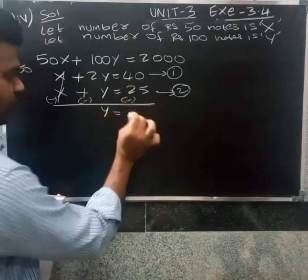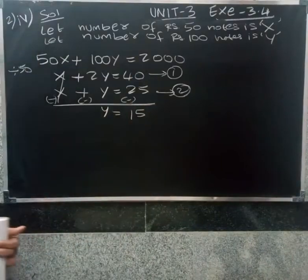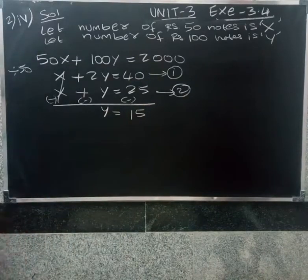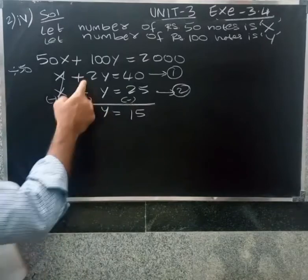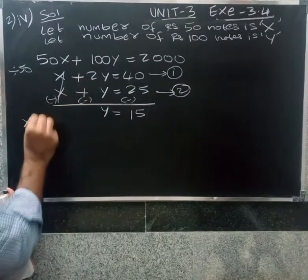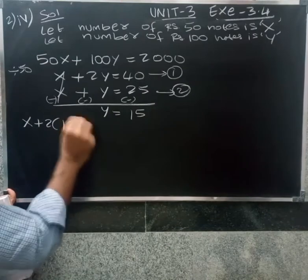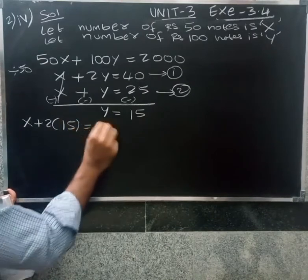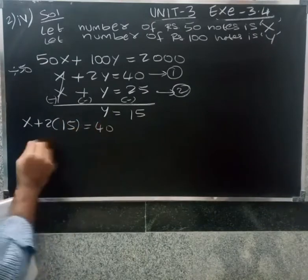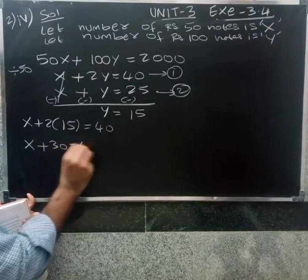After elimination: 2y minus y gives y. And 40 minus 25 is 15, so y equals 15. Now substitute y equals 15 back into the first equation: x plus 2 into 15 equals 40, so x equals 40 minus 30, which gives x equals 10.